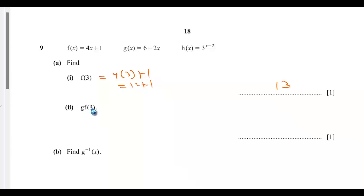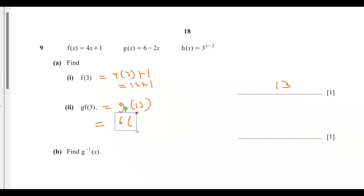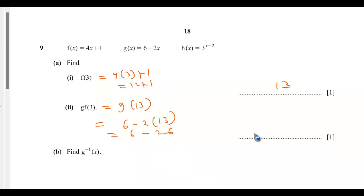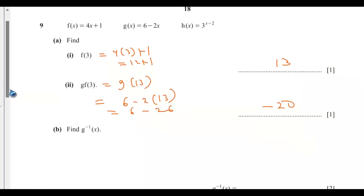The composite function gf(3) is the same as g(f(3)), which is g(13) because f(3) is already 13. So we find g(13): anywhere we see x in g(x) we pass in 13, giving 6 minus 2 times 13, which is 6 minus 26, and that is negative 20.